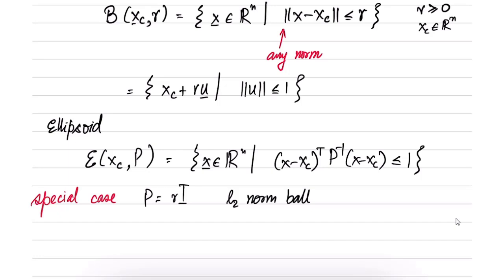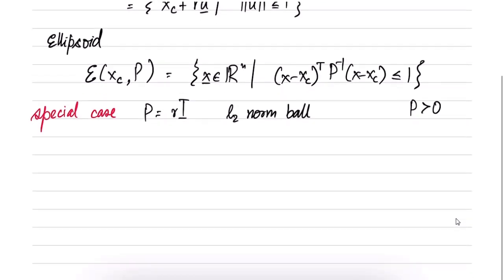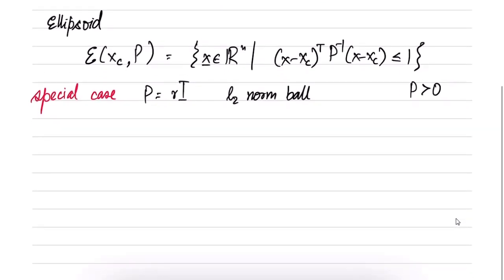For a valid ellipsoid, P must be strictly positive definite and symmetric, since positive definiteness is only defined for symmetric matrices.